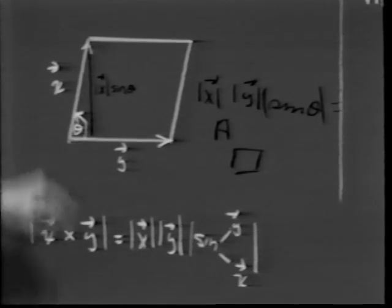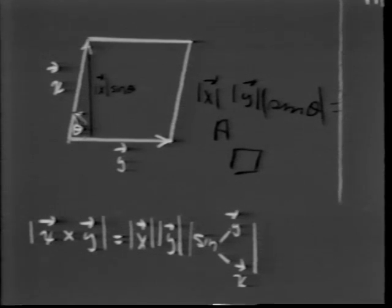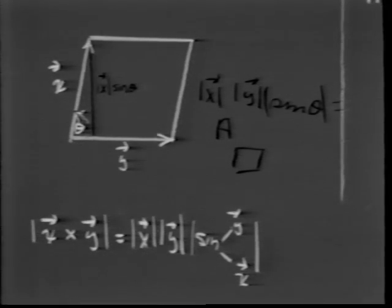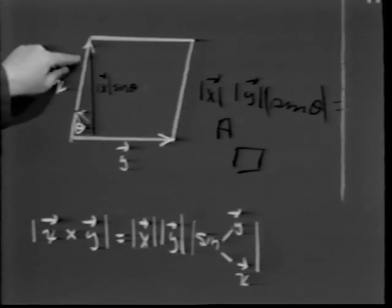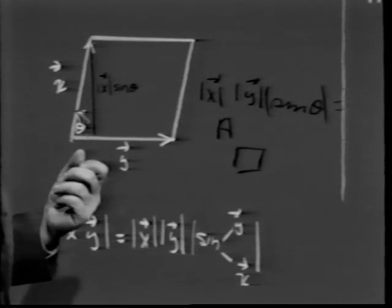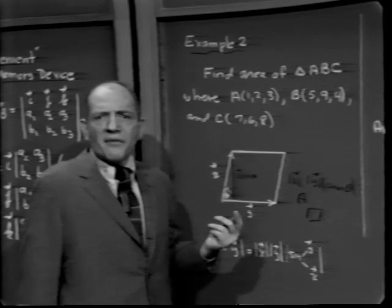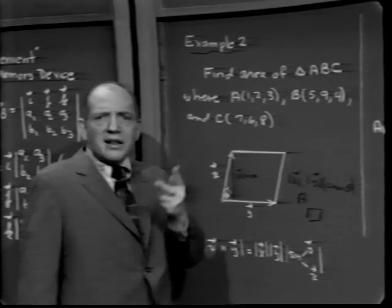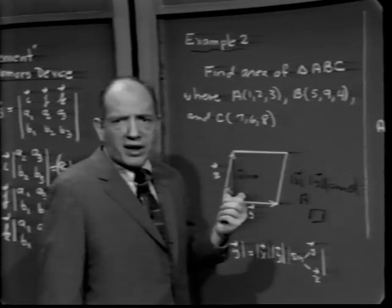This gives a nice geometric interpretation: as you change the angle between x and y (keeping their lengths fixed), the area of the parallelogram changes. When the angle is 0, the parallelogram has no area; when the angle is 90 degrees, the area is maximized. The magnitude of the cross product varies exactly as the area of the parallelogram formed by the two vectors.